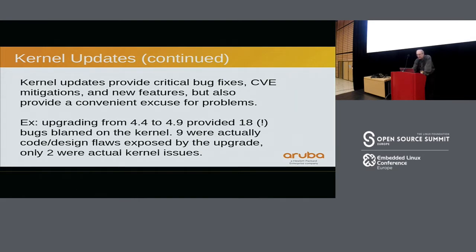When we upgraded from 4.4 to 4.9, we got 18 different bugs all blamed on the kernel. Half of those were actually code or design flaws that were exposed by the upgrade — the kernel started being more careful with parameters, so we had to fix the application code. Your code worked before and it doesn't work now — but it's your code that's bad. Only two of those were actually kernel issues; the rest were misunderstandings.